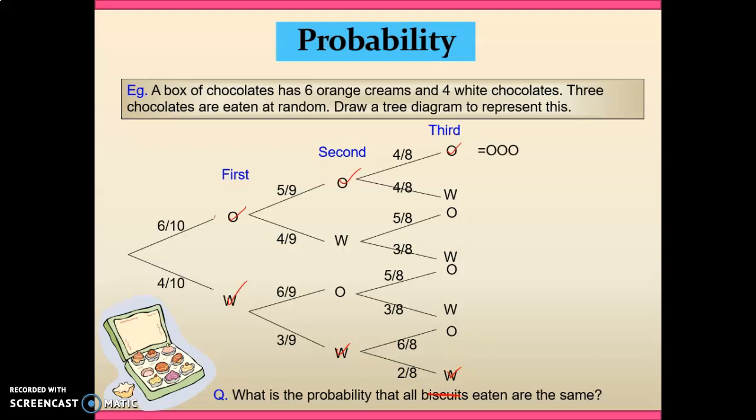So if it was orange, orange, orange, that we happen to have, there is a progressively lower chance of getting them. And to find the probability, we take the probabilities on each of the independent branches, and we multiply them together. Remembering that we multiply the numerators together to give us our numerator, and the denominators together to give us our denominator.